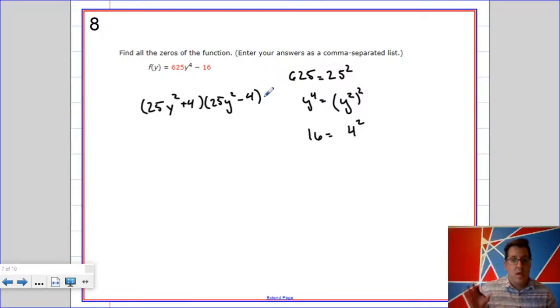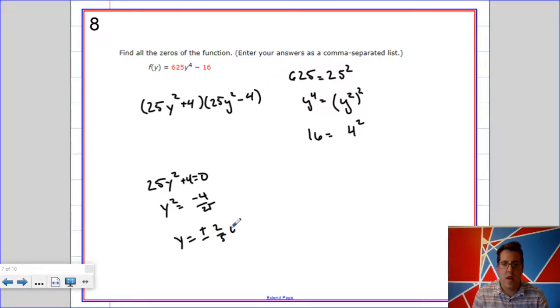So this will factor to 25y squared plus 4 times 25y squared minus 4. Okay, now if you're asked to find all of the zeros from those factors, 25y squared plus 4 equals 0 would give you y squared equals negative 4/25ths, or y equals plus or minus 2/5ths i.